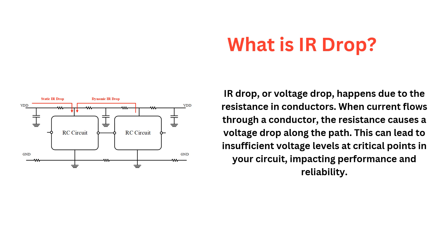So what is IR drop? IR drop, or voltage drop, happens due to the resistance in the conductors. When current flows through a conductor, the resistance causes a voltage drop along the path. This can lead to insufficient voltage levels at critical points in your circuit, impacting performance and reliability.